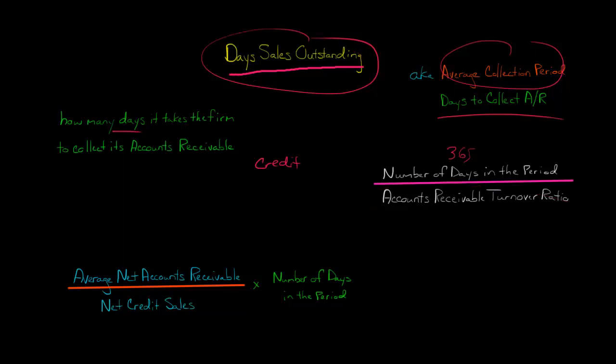The other way to do it is you could take average net accounts receivable and then divide that by net credit sales. Net sales is gross sales minus sales discounts, sales returns allowances. But net credit sales also subtracts out cash sales. So we divide by net credit sales, then we take this whole amount and multiply that by the number of days in the period. So if it was on an annual basis, we looked at the annual net credit sales, then we would multiply by 365.